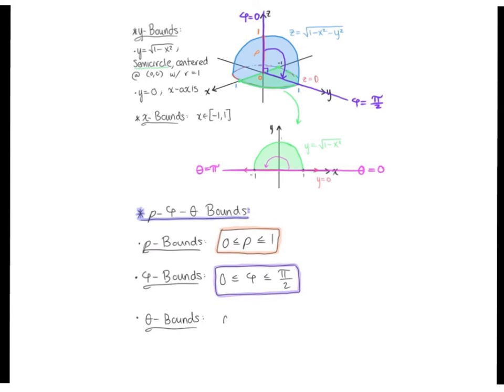And so the bounds on theta: theta is greater than or equal to zero, less than or equal to pi.